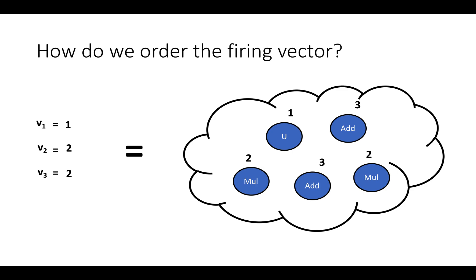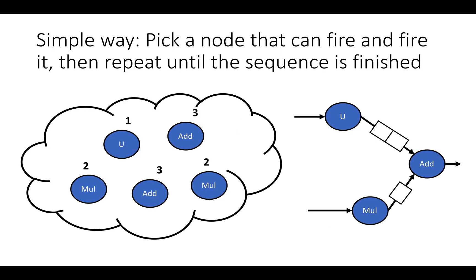So how do we order the firing vector? There are a lot of different ways, and computing schedules in data flow is a huge topic. But here's a really simple way that works for data flow graphs that are directed acyclic graphs like the one we're looking at. It's basically just a topological sort. We're going to pick a node that can fire, fire it, and then repeat until the sequence is finished.